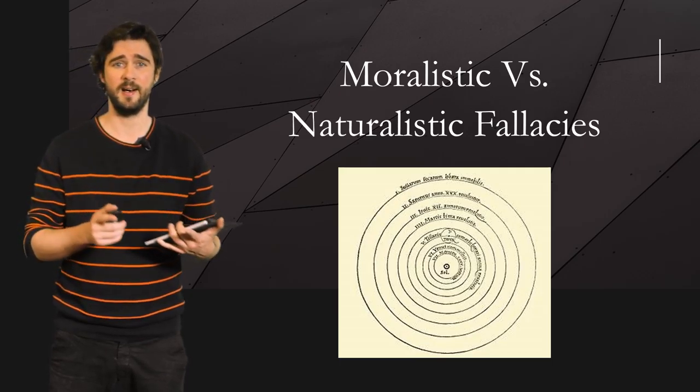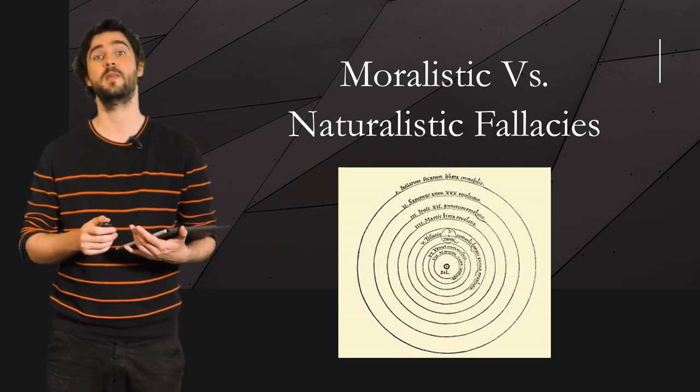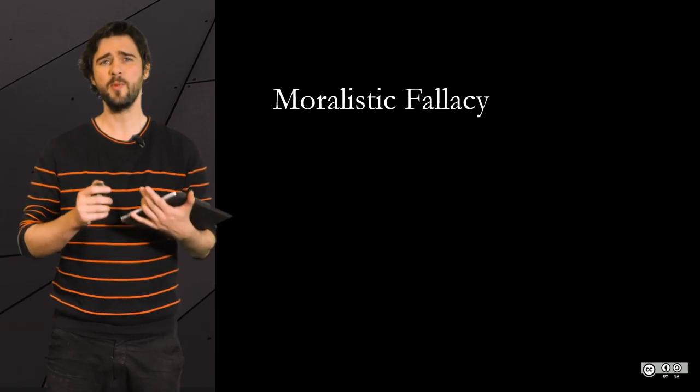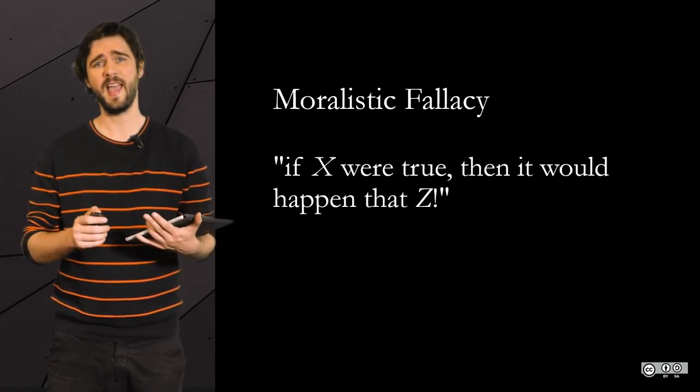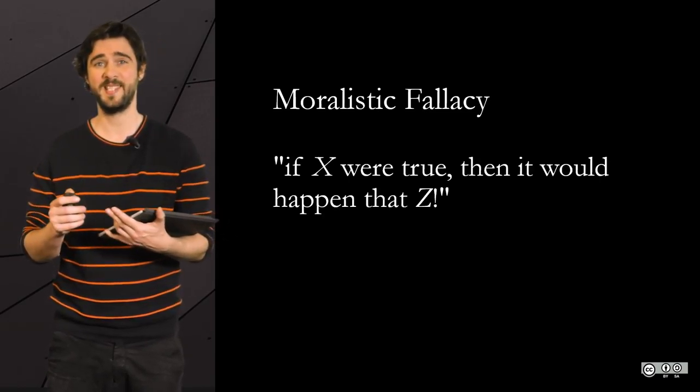In this video, we are going to discuss moralistic and naturalistic fallacies. In a way, they oppose each other. In the case of the moralistic fallacy, you believe that because things should or shouldn't be in a particular way, then they are not. In the case of naturalistic fallacies, such as the appeal to nature, it is the other way round: because things are the way they are, because they are natural in a sense, then they must be good.